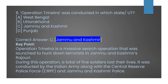Question number eight: Operation Trinitra, which was organized recently, was conducted in which state or union territory? Option A: West Bengal. Option B: Uttarakhand. Option C: Jammu and Kashmir. Option D: Punjab. The correct answer is Option C, Jammu and Kashmir. Operation Trinitra is a massive search operation launched to hunt down terrorists in Rajouri, Jammu and Kashmir. During this operation, a total of five soldiers lost their lives. It was conducted by the Indian Army alongside the Central Reserve Police Force (CRPF) and Jammu and Kashmir Police.